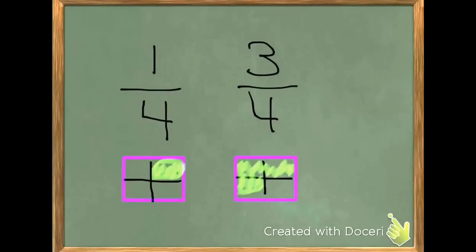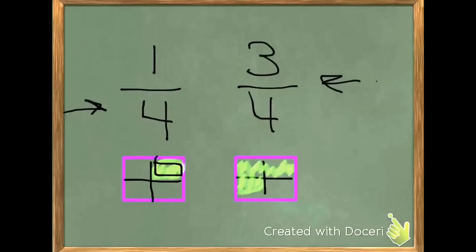In the last lesson, we learned how to compare fractions with the same denominator. What that means is that the shape of the same size is divided up into the same number of pieces. Then we have to look at the numerator to see how many pieces we're talking about. Here we have 1 fourth, and that means out of 4 equal pieces, 1 piece is shaded in.